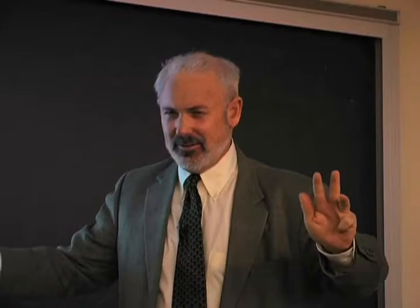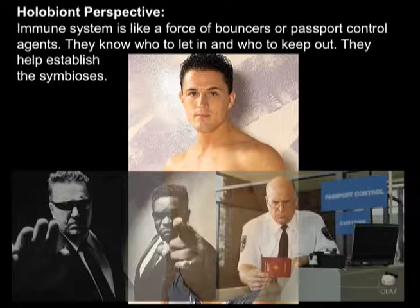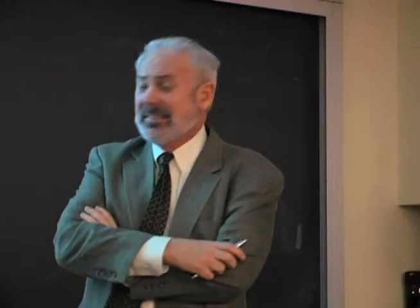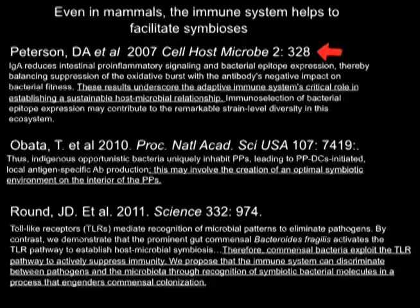What about the immune system? We know that the immune system protects us against the hostile world. But recent evidence has shown that our immune system is more like bouncers or passport control — they know who to let in and who to keep out. And so our immune system actually prepares Peyer's patches and other places in the intestine for microbial symbionts to dwell in.